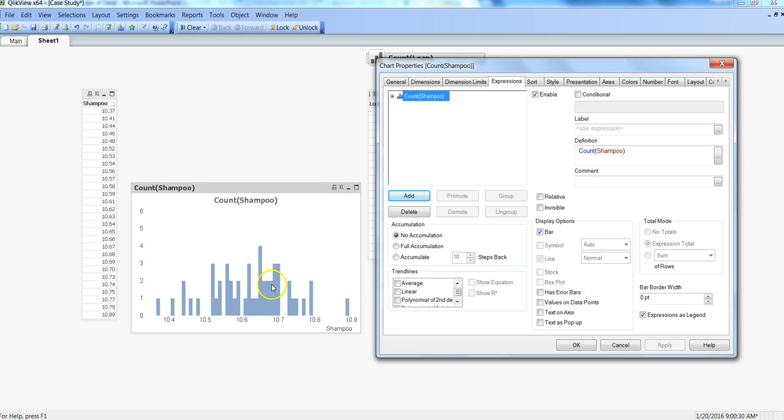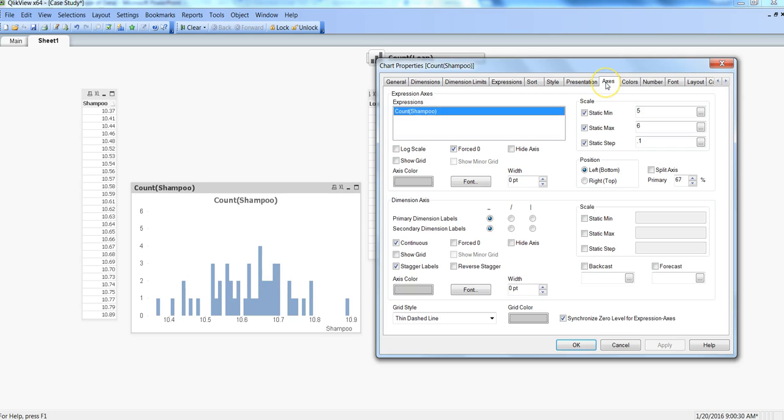So what you need to do—the additional thing which I have done in the configuration of this chart—is go to the axis, and here you need to specify the continuous option on the dimension axis.